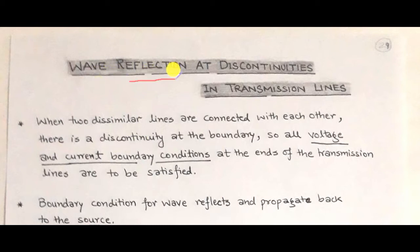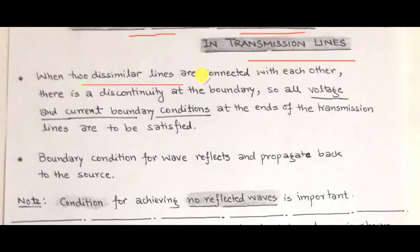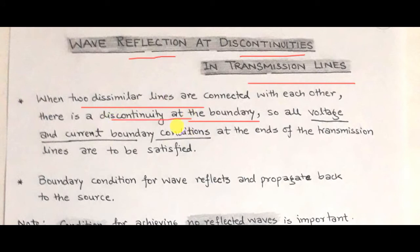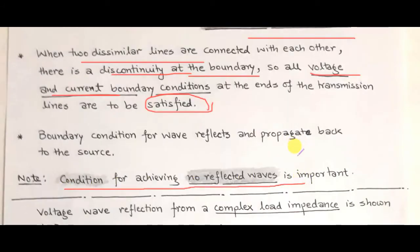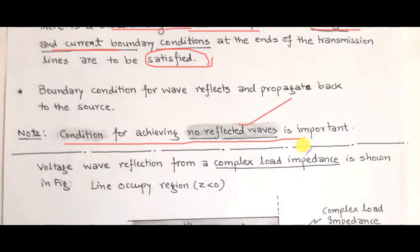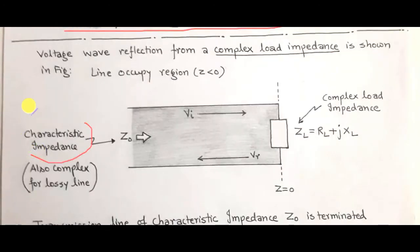The topic is wave reflection at discontinuities in transmission lines. When two dissimilar transmission lines are connected together, a boundary is created. At this boundary, the incident wave is reflected back — this is called a discontinuity. Here we discuss the voltage and current boundary conditions that the transmission line satisfies, and the condition to achieve no reflection, meaning all transmitted power reaches the destination.